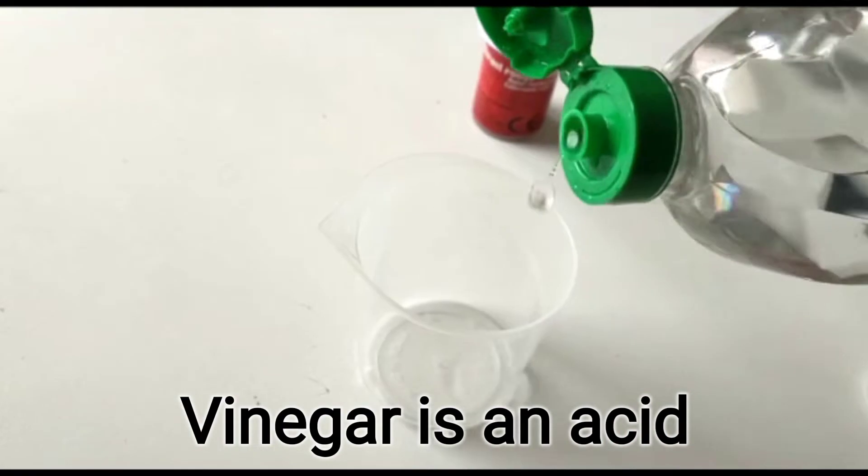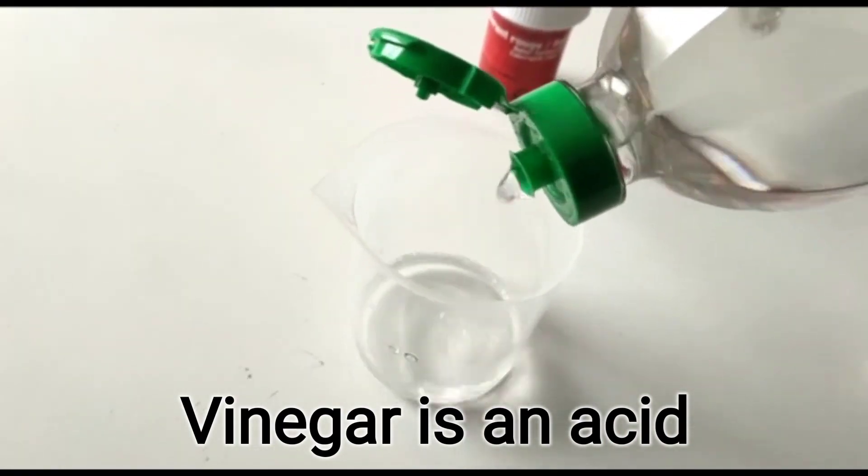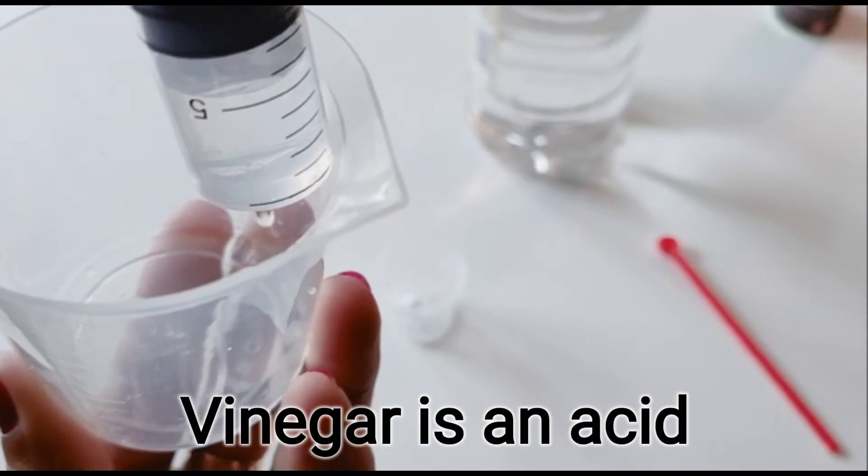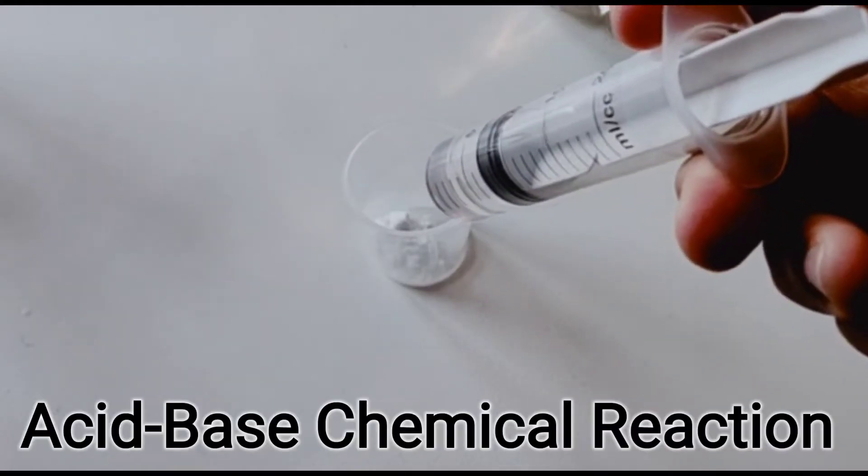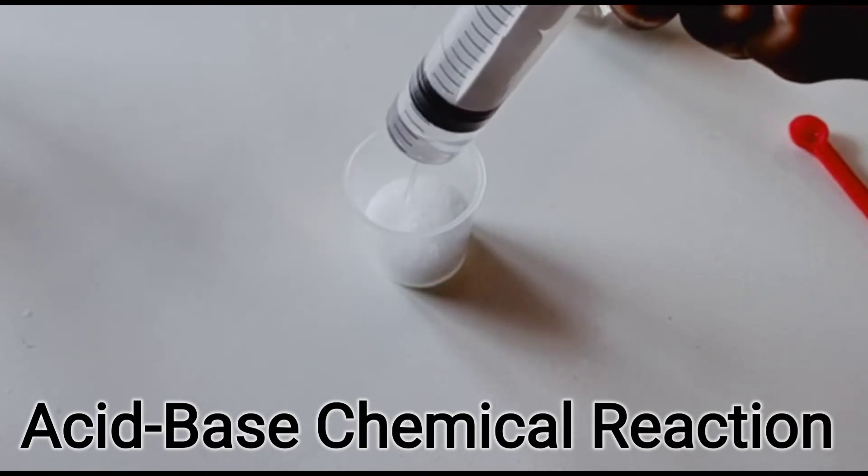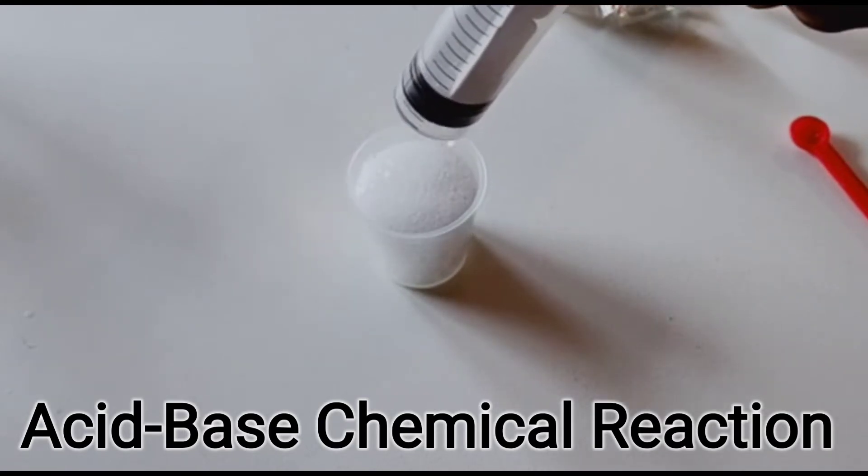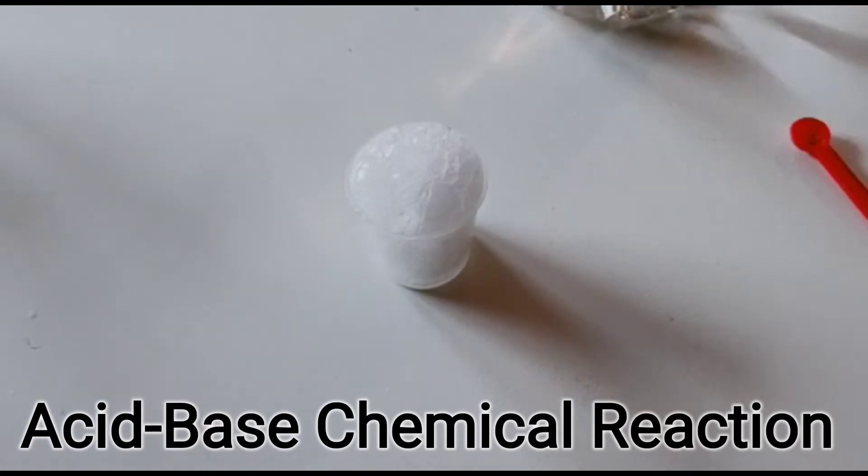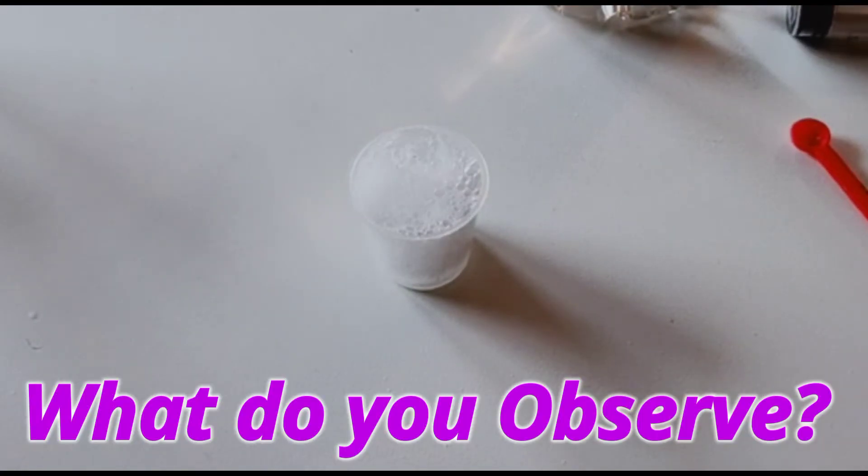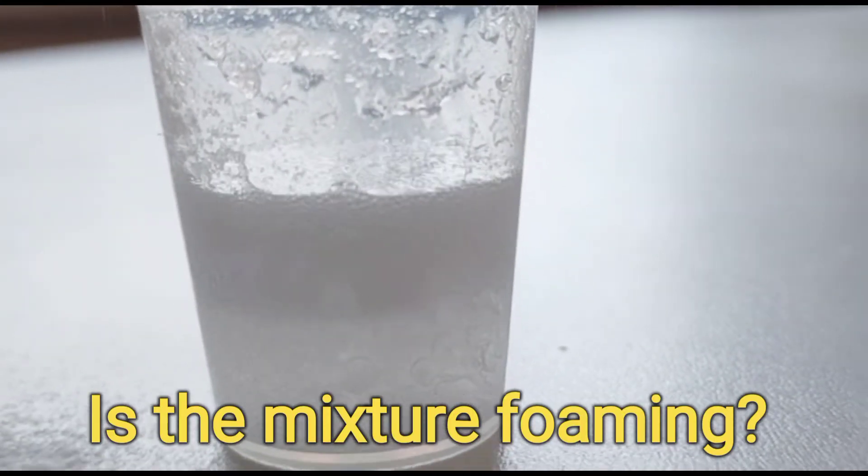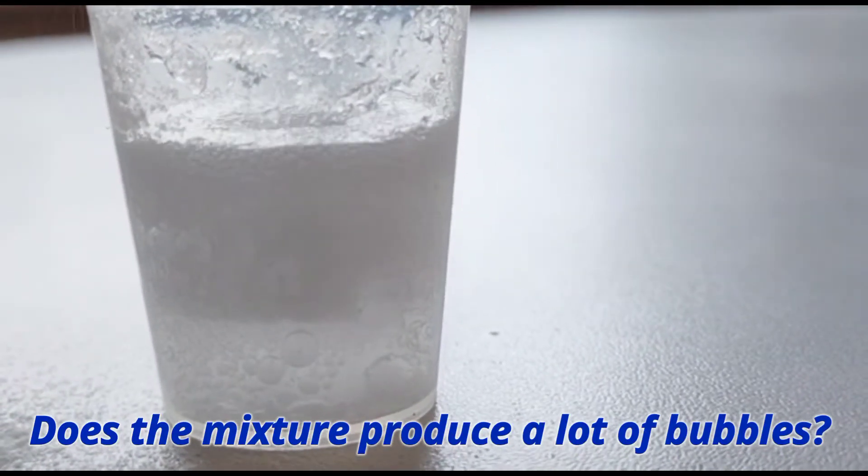Step two: pour vinegar into a large beaker and with the help of a syringe, add five to seven ml of vinegar on top of the baking soda and see what happens when the two ingredients mix. Watch carefully the chemical reaction inside the beaker. What do you observe? Is the mixture foaming? Does the mixture produce a lot of bubbles?